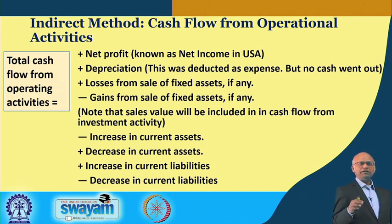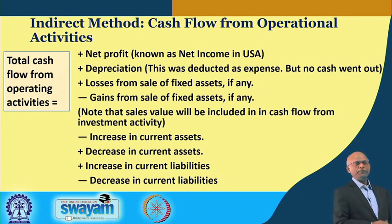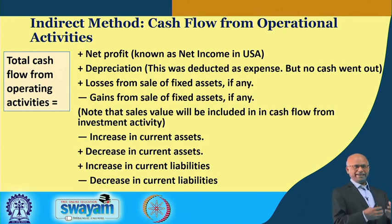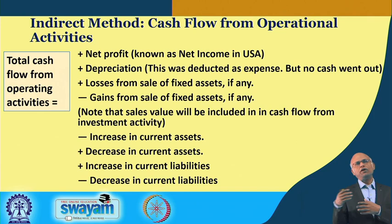Suppose in some year you sell a fixed asset — for example, a billing machine that cost 10,000 rupees. After a year you realize you do not need it and sell it in the market. You might sell it at slightly higher or lower than its book value. If you gain something, that gain is deducted — because you have already allowed the full value of the machine and its depreciation, so any gain becomes excess. Any gain on sale of a fixed asset is deducted; any loss is added.